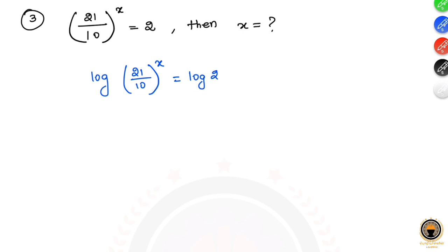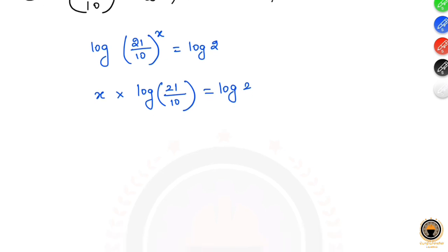Using the logarithmic power rule, x times log(21/10) equals log 2. Since division inside the log becomes subtraction, this gives x times (log 21 minus log 10) equals log 2.